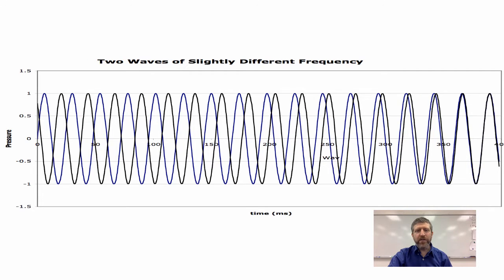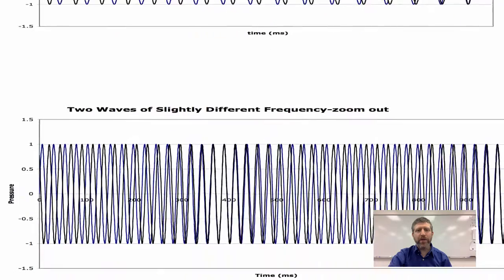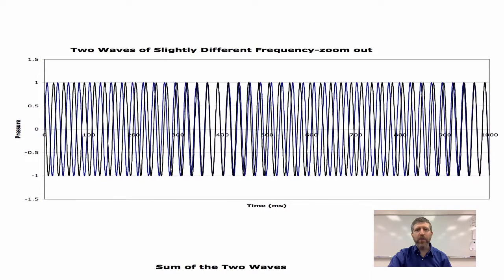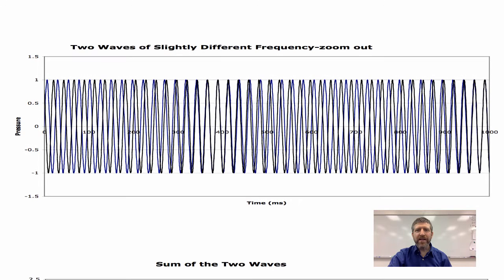I'm going to zoom out a bit so we can see the bigger picture. Here you can see that there are certain places where the two waves are exactly out of phase by half a cycle — the compression of one at the same time as the rarefaction of the other. And sometimes they're in phase where compressions exactly line up in time. See if you can figure out when they're out of phase and when they're in phase.